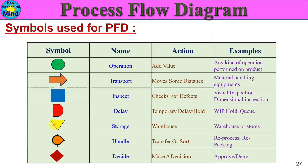The fifth symbol is an inverted triangle, which means storage - warehouse or stores. Additional symbols cover handling, transfer or segregation, reprocess, and repacking. These additional symbols will be used accordingly for those specific activities in the process flow diagram.